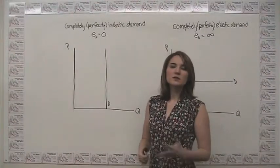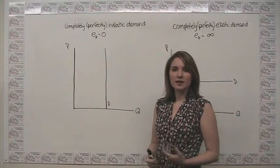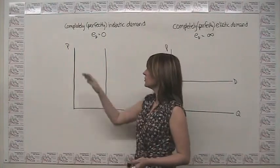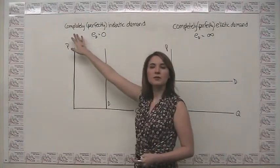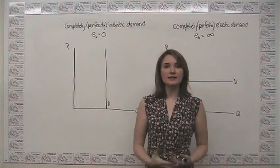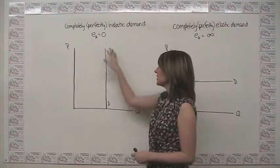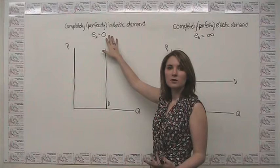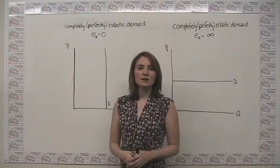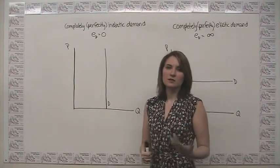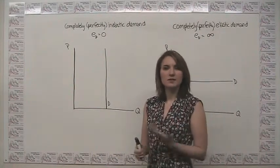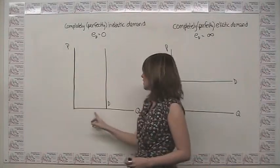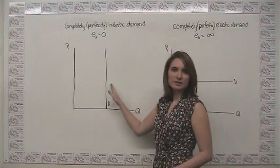We can also think about what demand would look like in very extreme situations. On one extreme, you have what we call completely or perfectly inelastic demand. That's demand where the elasticity is always zero — in other words, the change in quantity is also equal to zero — because no matter how much we change the price, our quantity demanded never changes.